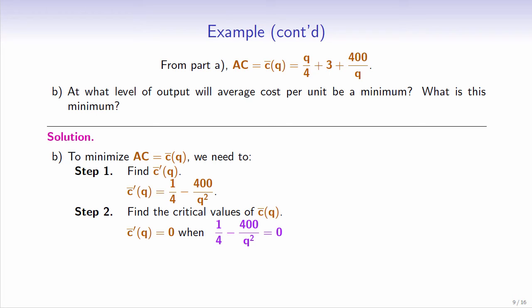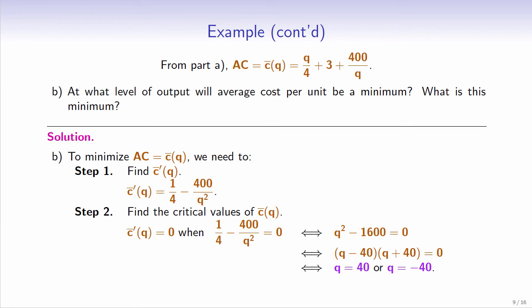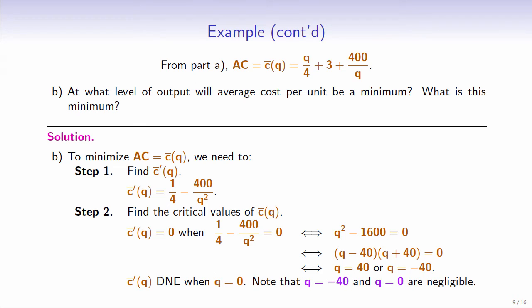Multiplying both sides by 4q squared, we have q squared minus 1600 equals 0. The left-hand side is a difference of squares, so we can factor it: q minus 40 times q plus 40 equals 0. So the first derivative equals 0 when q equals 40 or q equals negative 40. The first derivative does not exist when q equals 0. Both q equals negative 40 and q equals 0 are negligible, since we cannot have negative production and the average cost function is undefined at q equals 0.